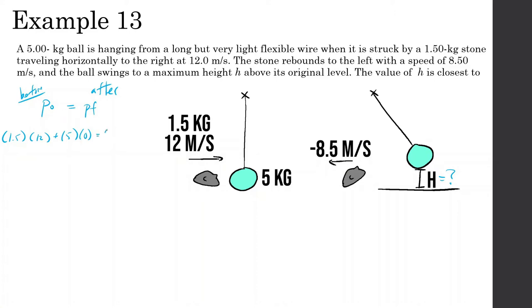After the collision, we have the 1.5kg stone going 8.5 m/s to the left, so that's going to be negative 8.5. And we don't know what the velocity of the ball is after the collision.